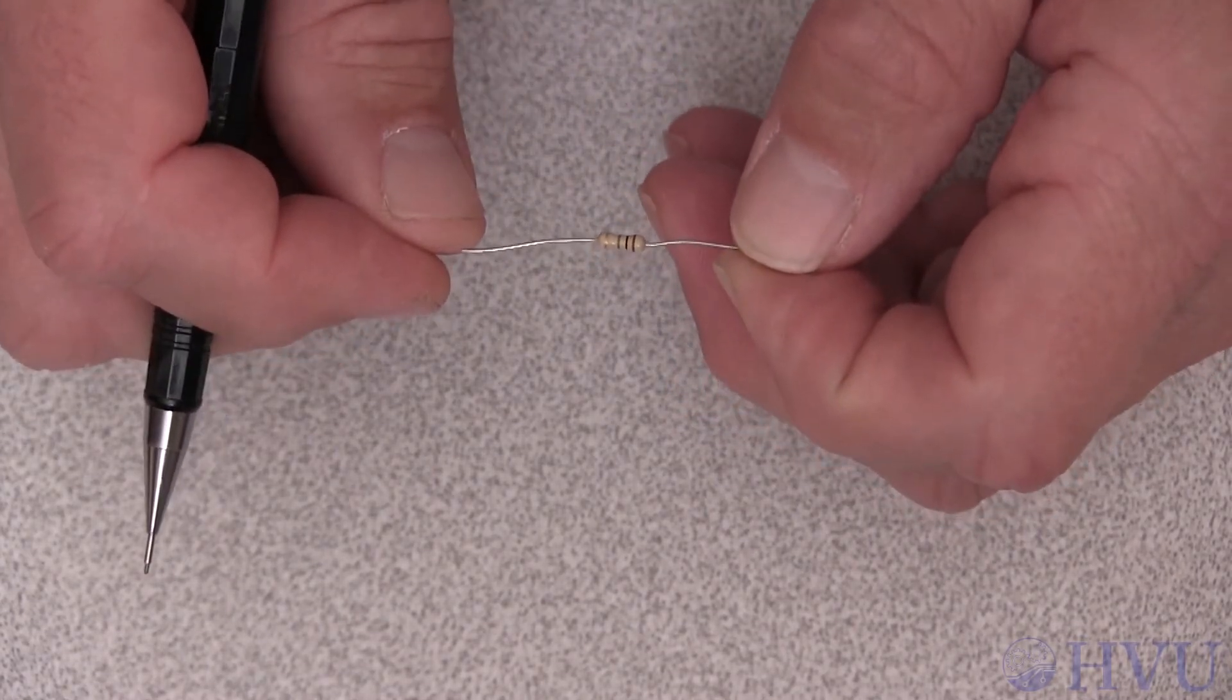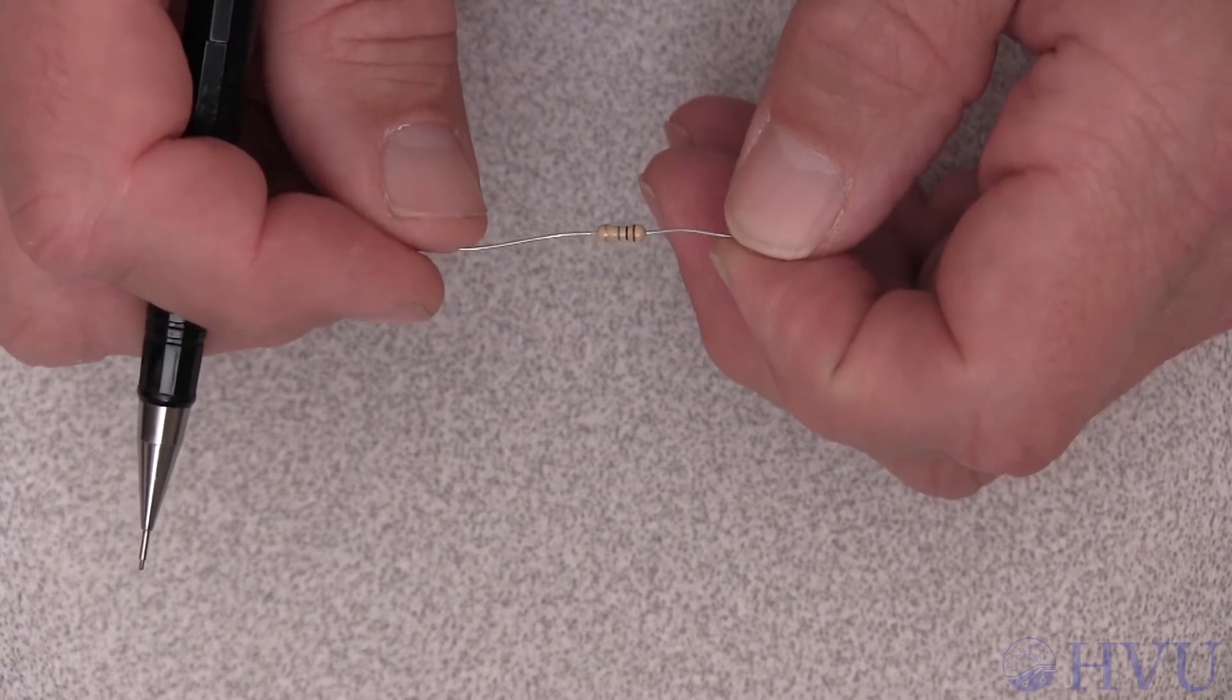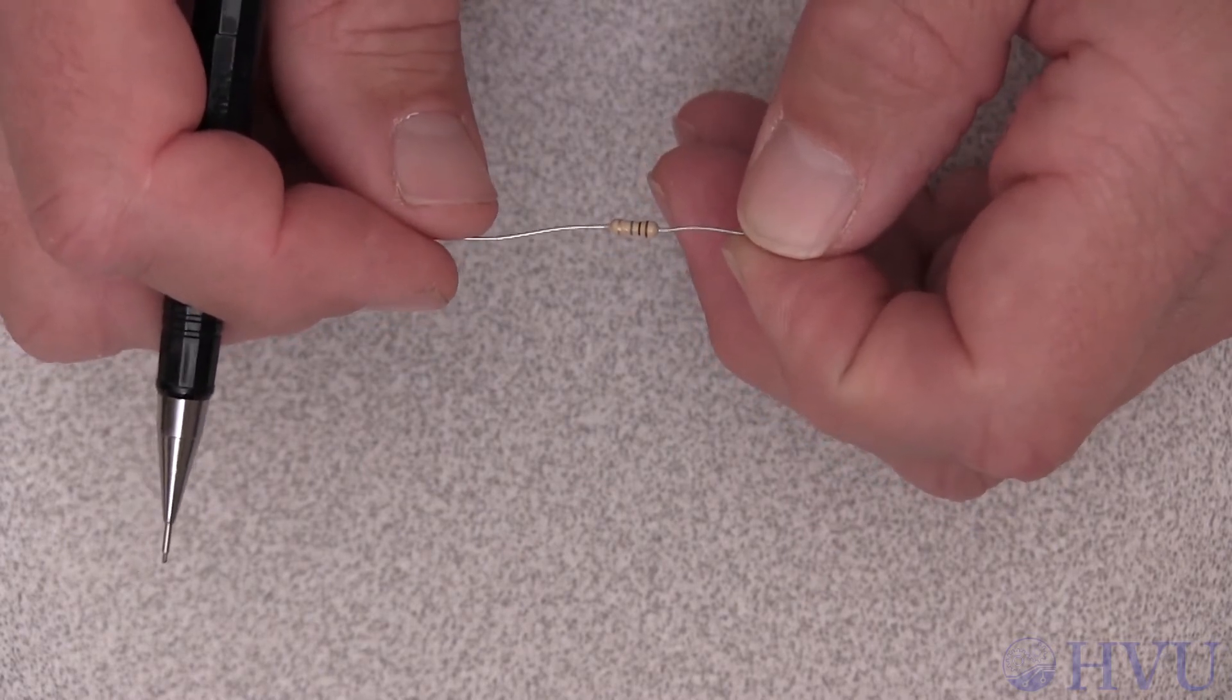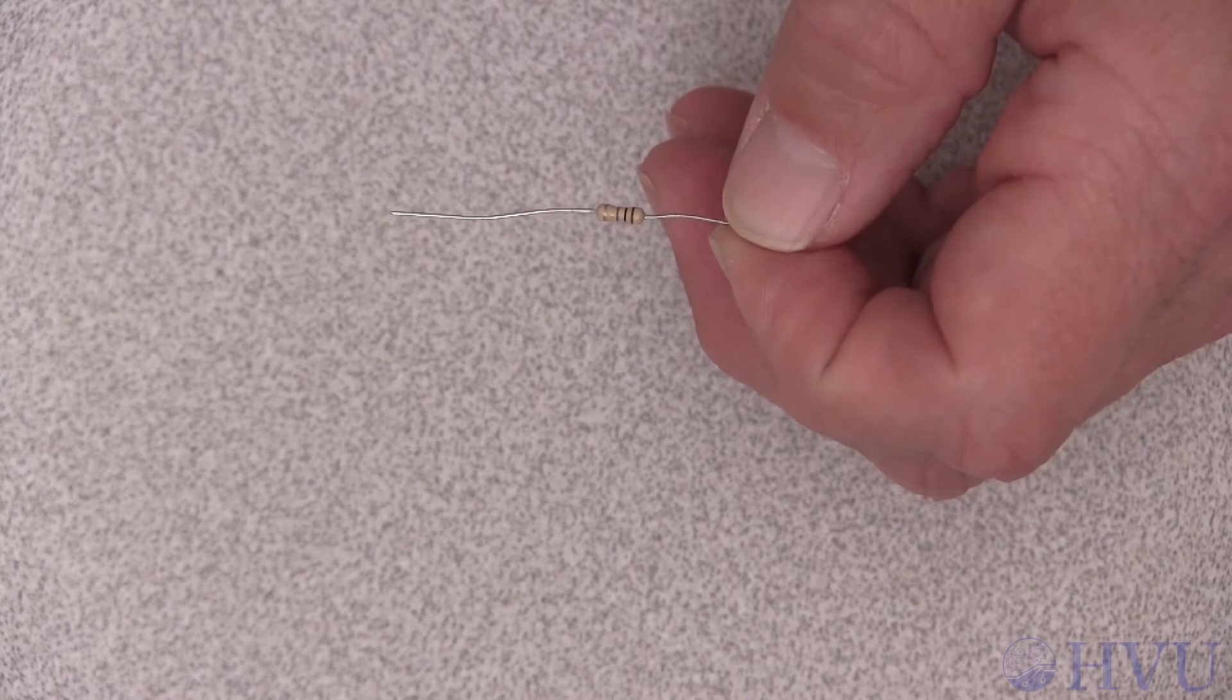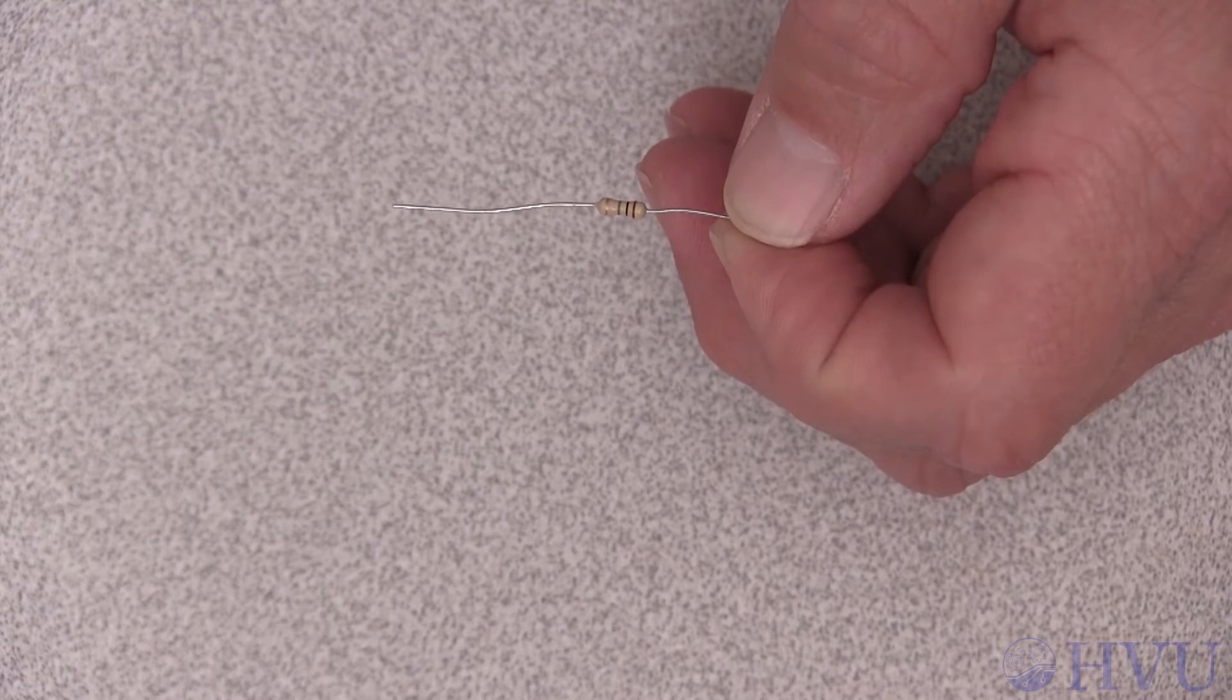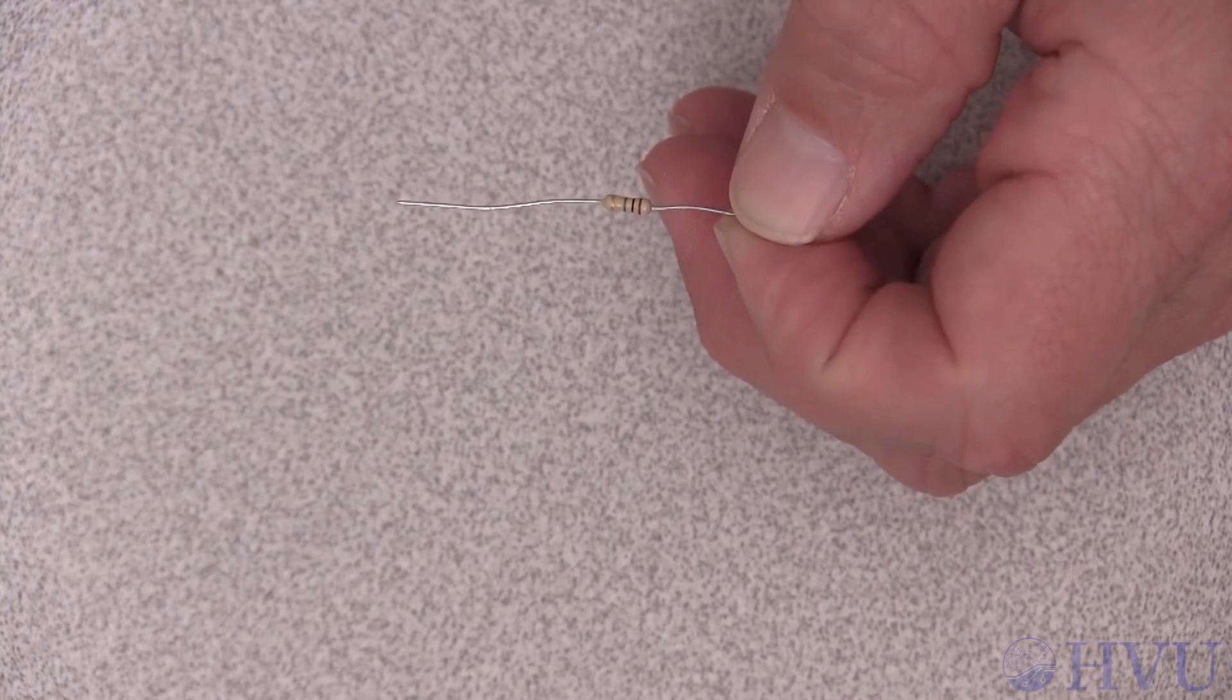This is another fixed resistor. It has a resistance of 1 megaohm. Notice that the physical size of the resistor doesn't correlate to the resistance value. The physical size is more closely related to the maximum power that the resistor can dissipate. The 1 megaohm resistor has a maximum power dissipation of less than half a watt.